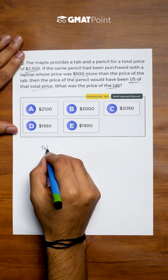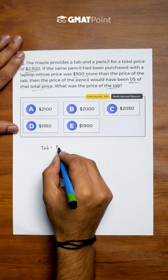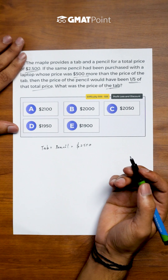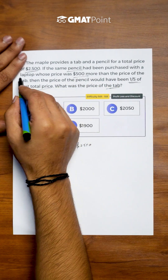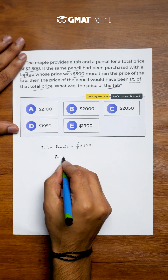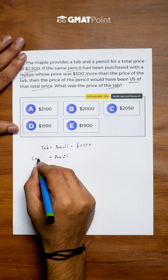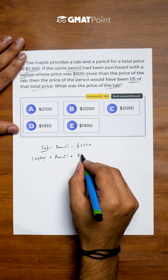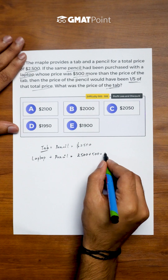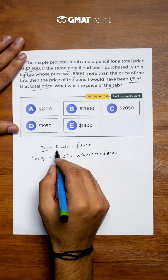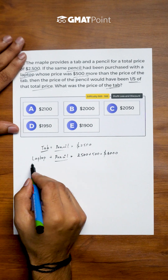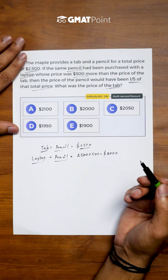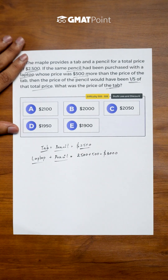We are given that the sum of the prices of tab and pencil equals 2500 dollars. If the pencil had been purchased along with the laptop, the price of the laptop is 500 dollars more than the price of the tab. So the total price would become 2500 plus 500, which equals 3000 dollars, because the price of the pencil remains the same in both cases.